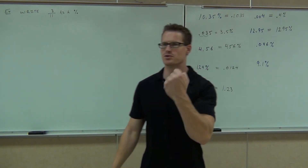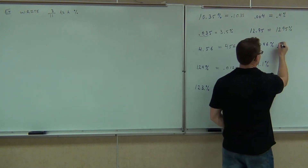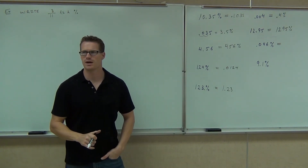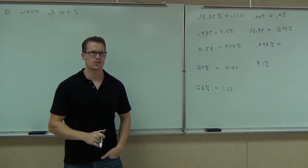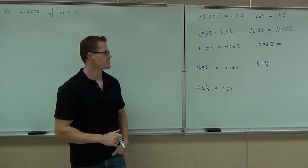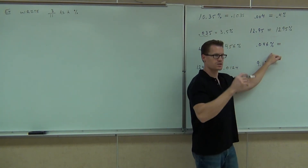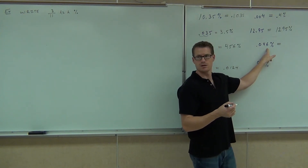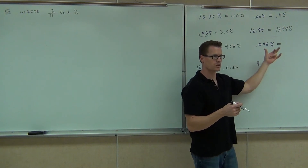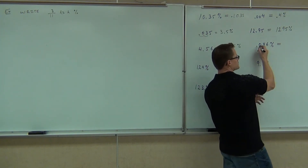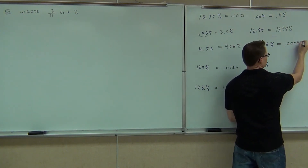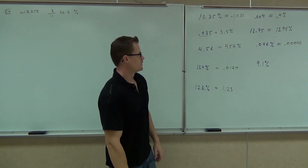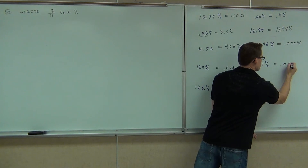0.046 percent — how do we change that into a decimal? Which way do we move that? To the left. Wait — to the left, but there's nothing to the left, so to the right? No — you're dividing by 100, which means you're making that number smaller. The decimal needs to look like a smaller number. If I moved it to the right I'd have 4.6, which looks bigger than the percent — not smaller. So moving left, it's got to be 0.00046. Last one: 9.1 percent — two spots to the left, you get 0.091.